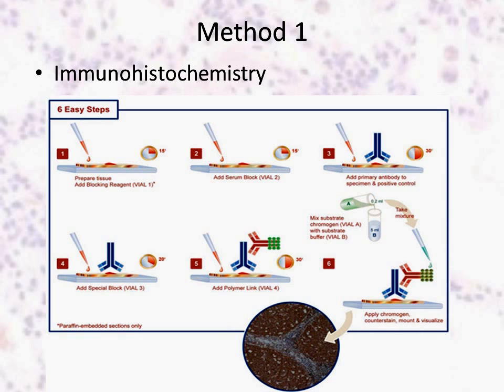Sections were rinsed in water followed by PBS and incubated in methanol containing 6% hydrogen peroxide for 20 minutes to quench endogenous peroxidase. Sections were then blocked using 5% normal goat serum and incubated with appropriate primary antibodies overnight at room temperature in a humidified chamber. Immunohistochemistry was then performed using the avidin-biotin peroxidase complex system.